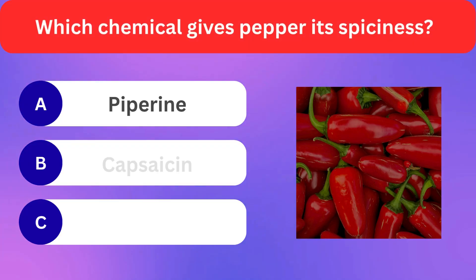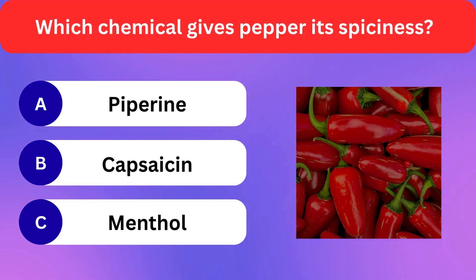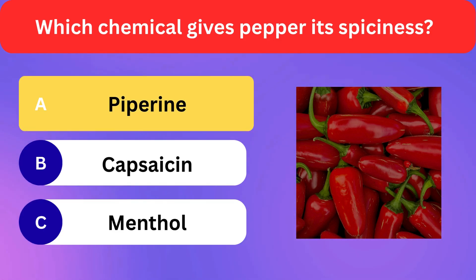Which chemical gives pepper its spiciness? Piperine, Capsaicin, Menthol. Correct answer is piperine.